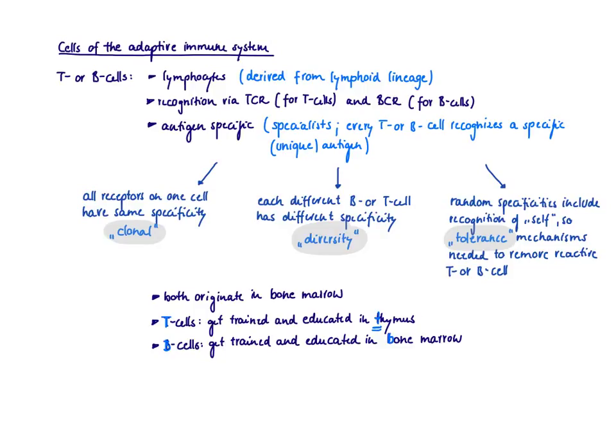So the special thing about these receptors is that they are antigen specific. So the T and B cells, these are the specialists. They recognize very specific, unique antigens.